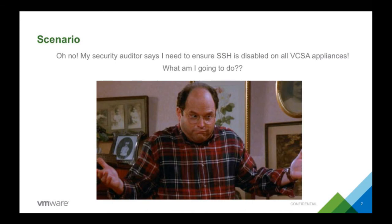Consider this scenario: I've had auditors walk into my environment and say you need to make this change. If I've got one vCenter server, that's not horrible. Maybe three or four — slightly less horrible but not great. But when you start getting into scale, or wanting to prove that your environment is in the state you say it's in, I can define all of this as code. I can take my vCenter configuration, fully define it in a text file, and prove that it's correct just by running that Ansible playbook.